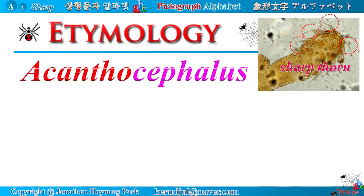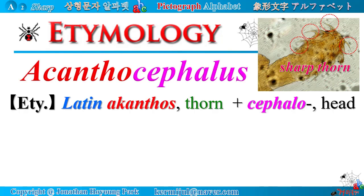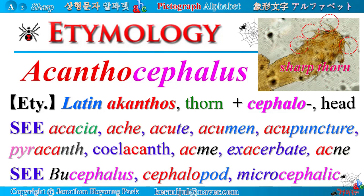Etymology — Acanthocephalus. Acanthocephalus is composed of Latin root acanthos, meaning thorn, and Latin root cephalo, meaning head. Literally, it means a kind of parasite having thorny hooks on its head. There are many related words containing Latin root acanthos,